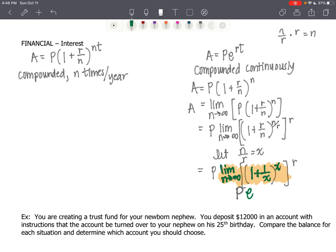Now I can change this to X as X gets really, really large, right? That right there is E from the previous video. And then we have raised to the R power. And then I'm going to bring back that T. And that is where our compounded continuously formula comes from.